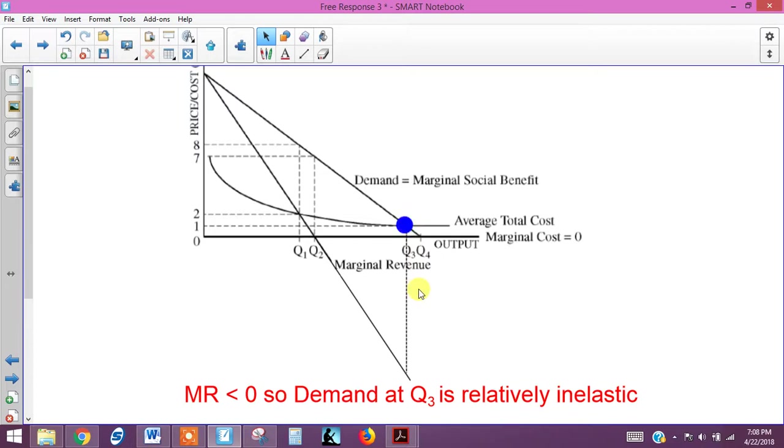So that tells us that this point right here on the demand curve is relatively inelastic. Now, just to remind you, if we wanted to know where price elasticity was unit elastic and elasticity of 1, it would be where marginal revenue equals 0 right here. So this is where the demand is unit elastic. And anything above marginal revenue is positive from here up. So from here up on the demand curve, demand is going to be relatively elastic.